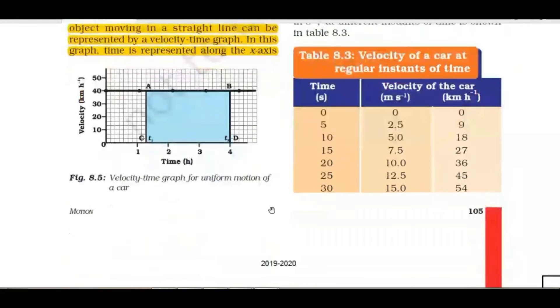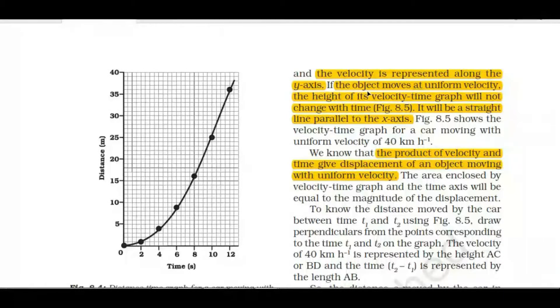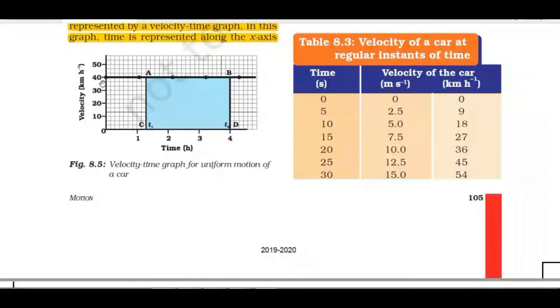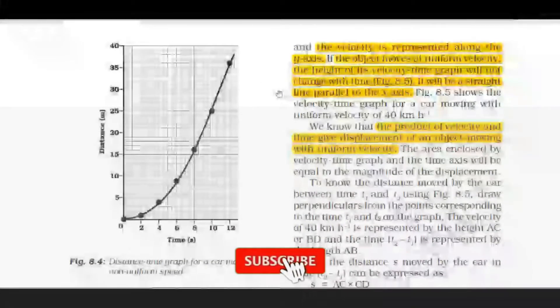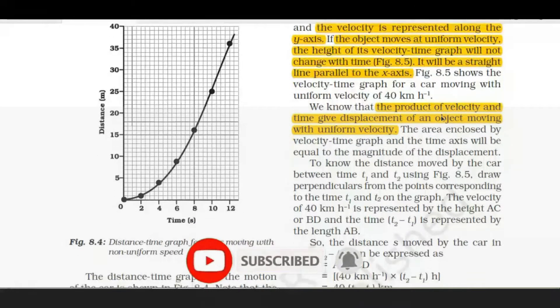In the velocity-time graph, velocity is represented on the y-axis and time on the x-axis. If an object moves at uniform velocity — meaning speed is not changing but time is changing — the graph will be a straight line parallel to the x-axis. For example, this graph shows the velocity is 40 km/h; the object is moving but with uniform velocity as time increases from 1 hour to 4 hours.